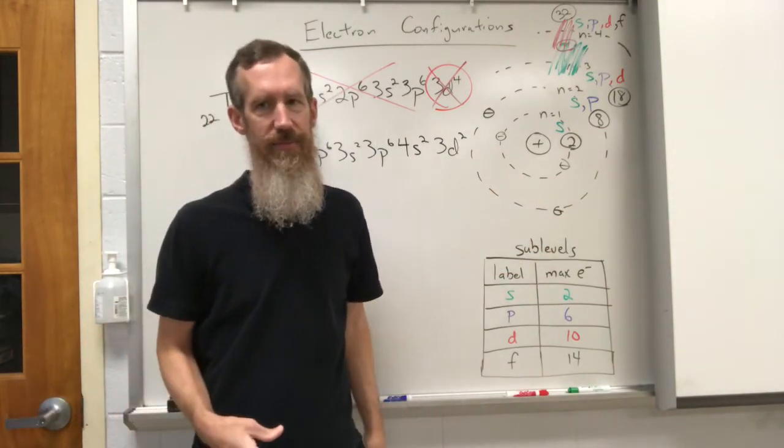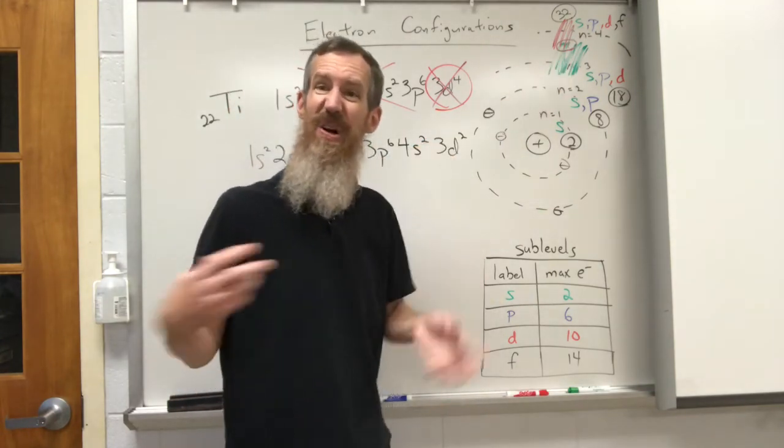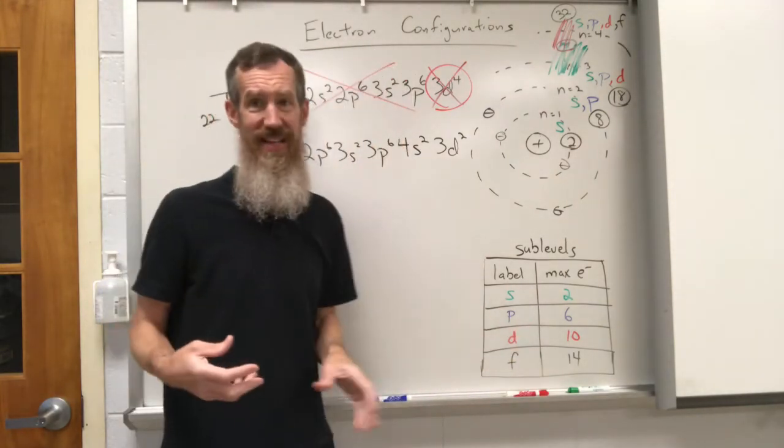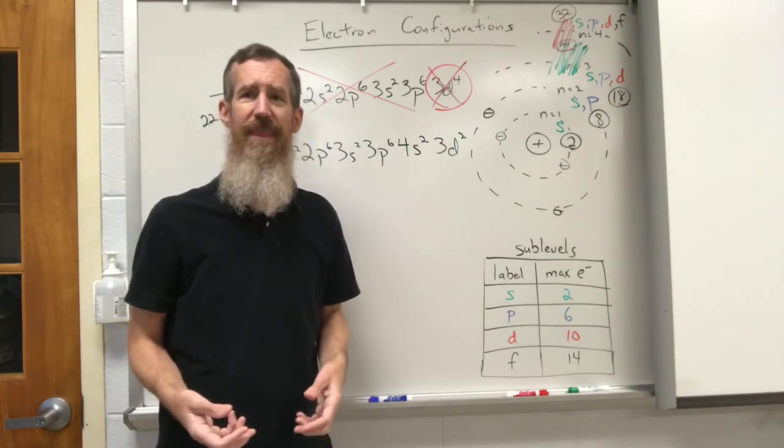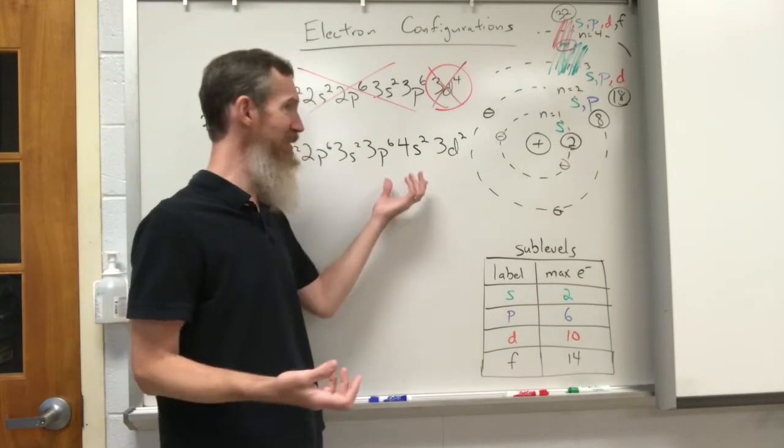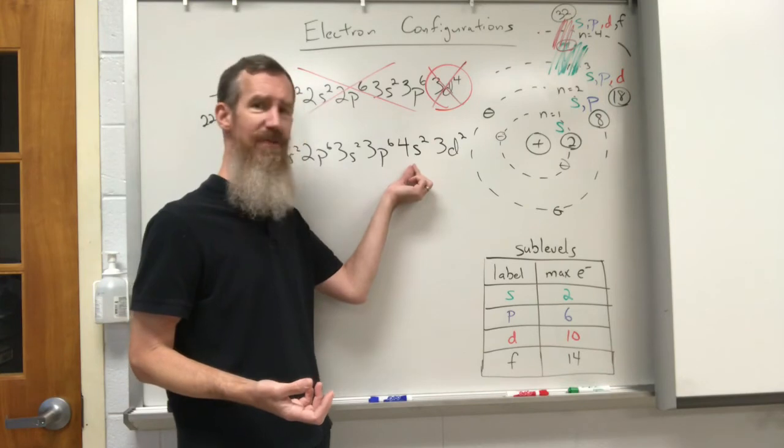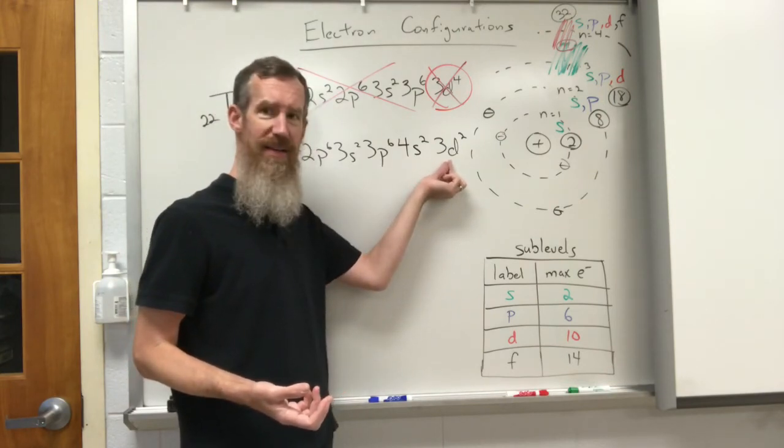And what happens is the fourth energy level is so big because it's got so many more electrons that it kind of pushes downward and bleeds into the third energy level before it. So what happens is that the fourth energy level actually starts before the 3d energy level because of this overlap. The 4s is gonna fill in the fourth, and the 4s is gonna start before the third one, before the third one ends.